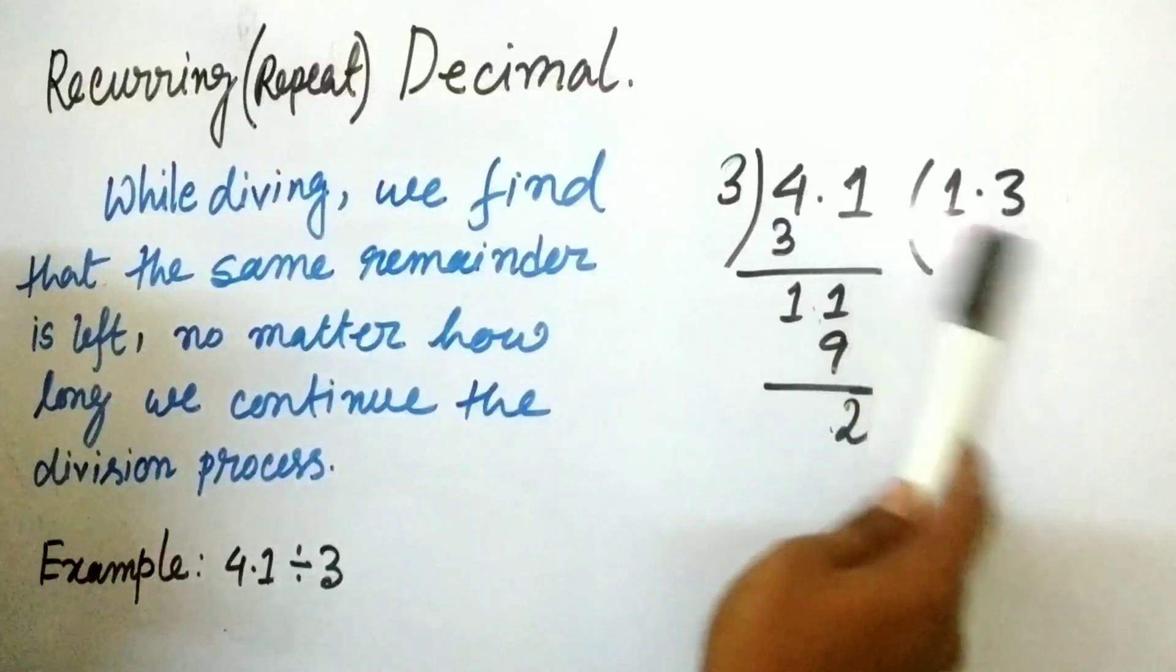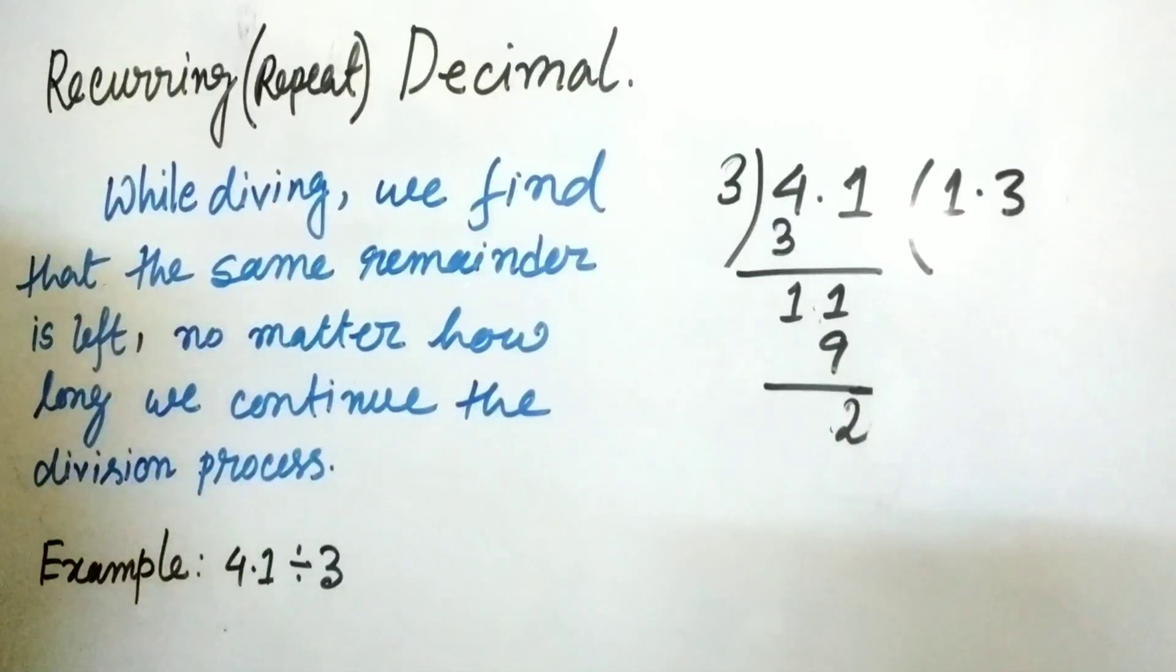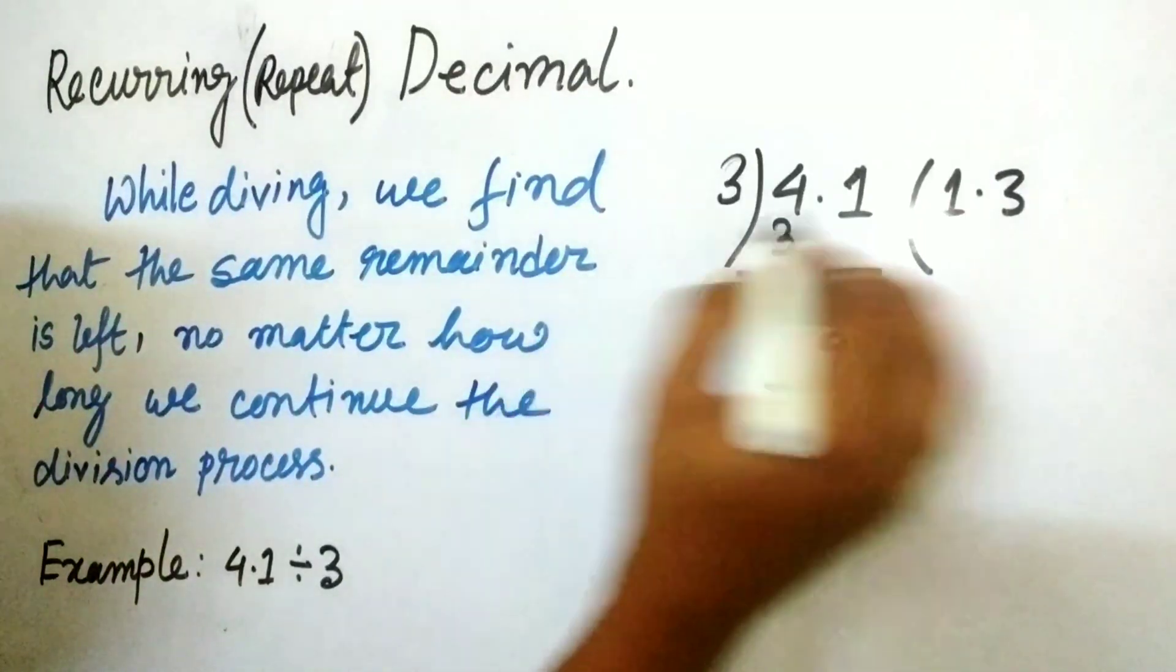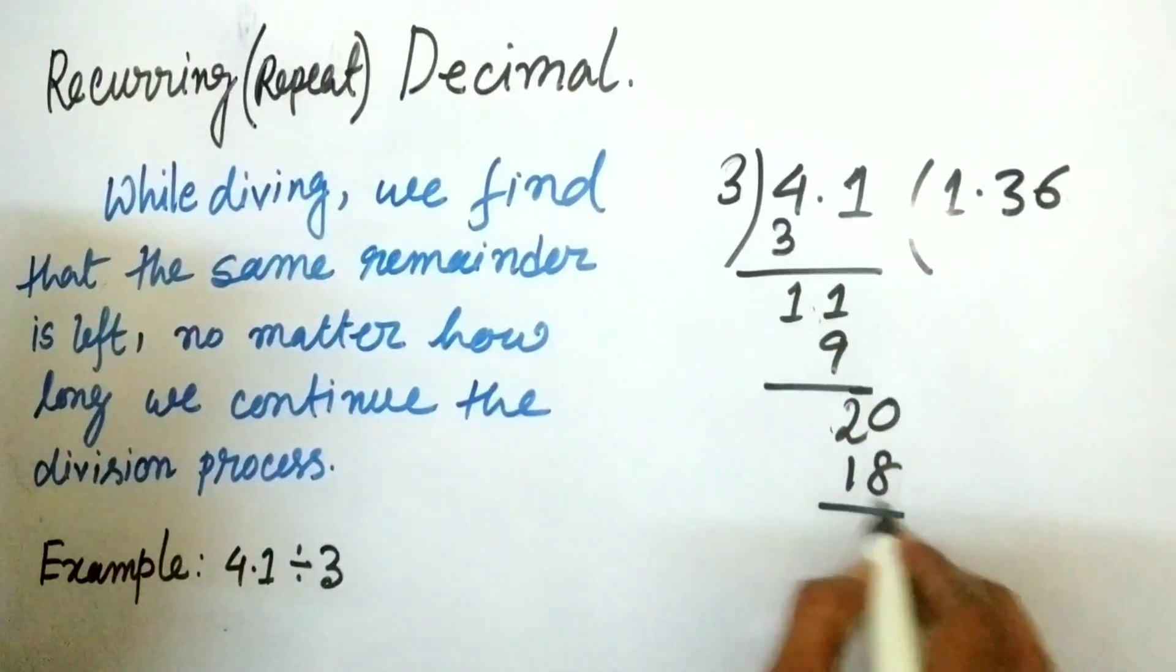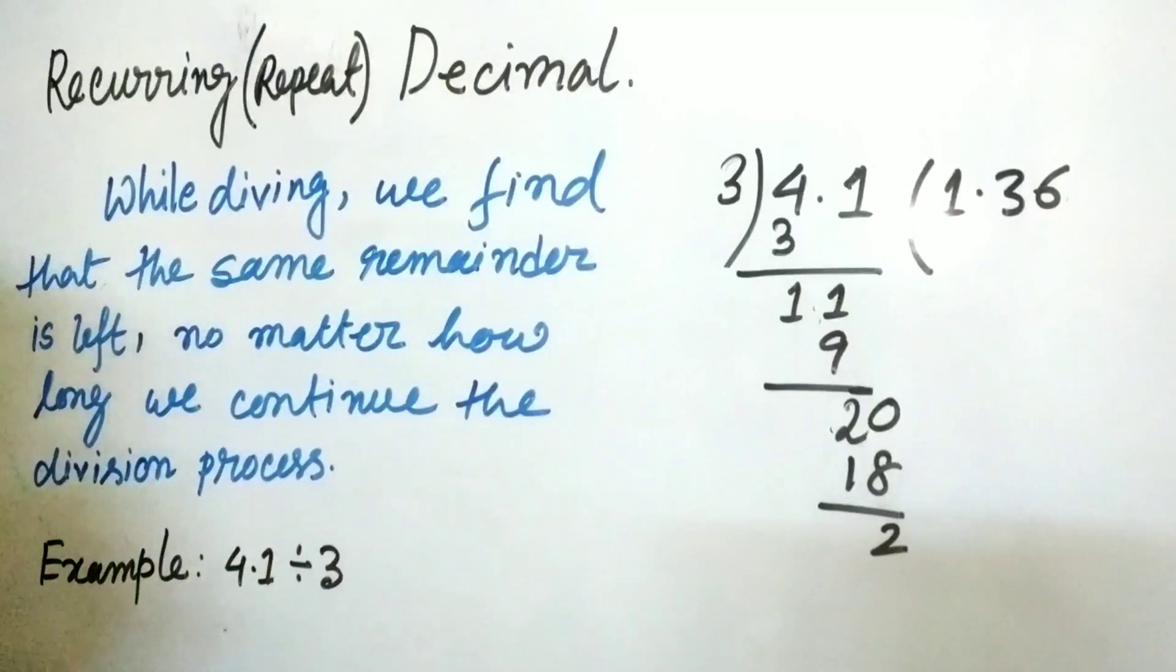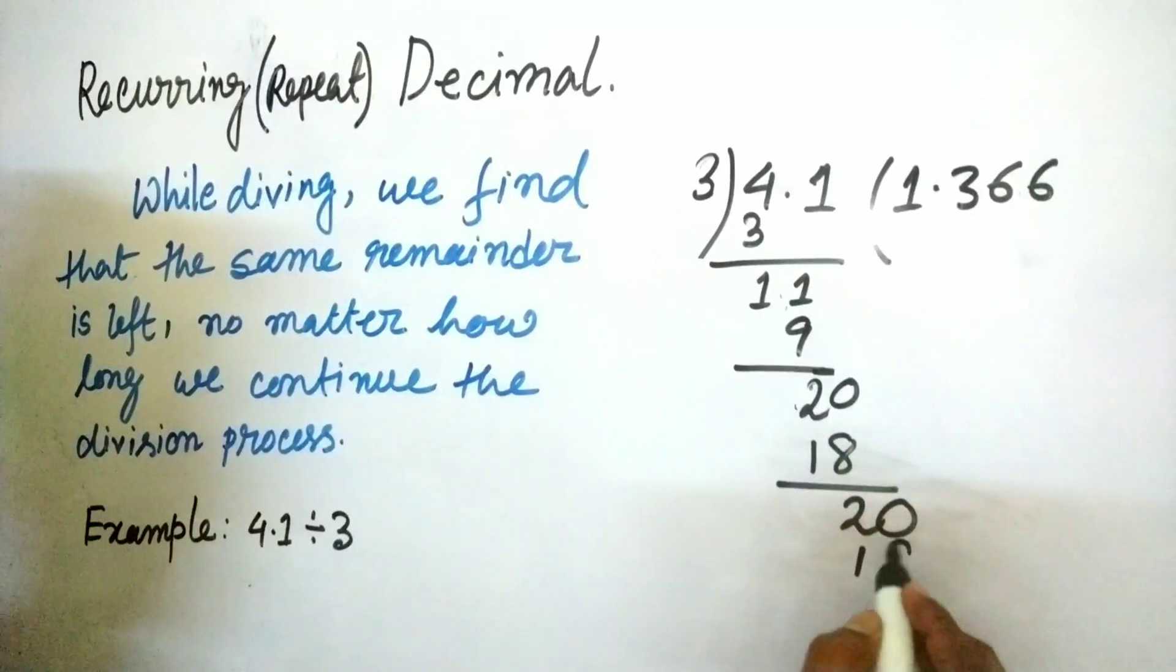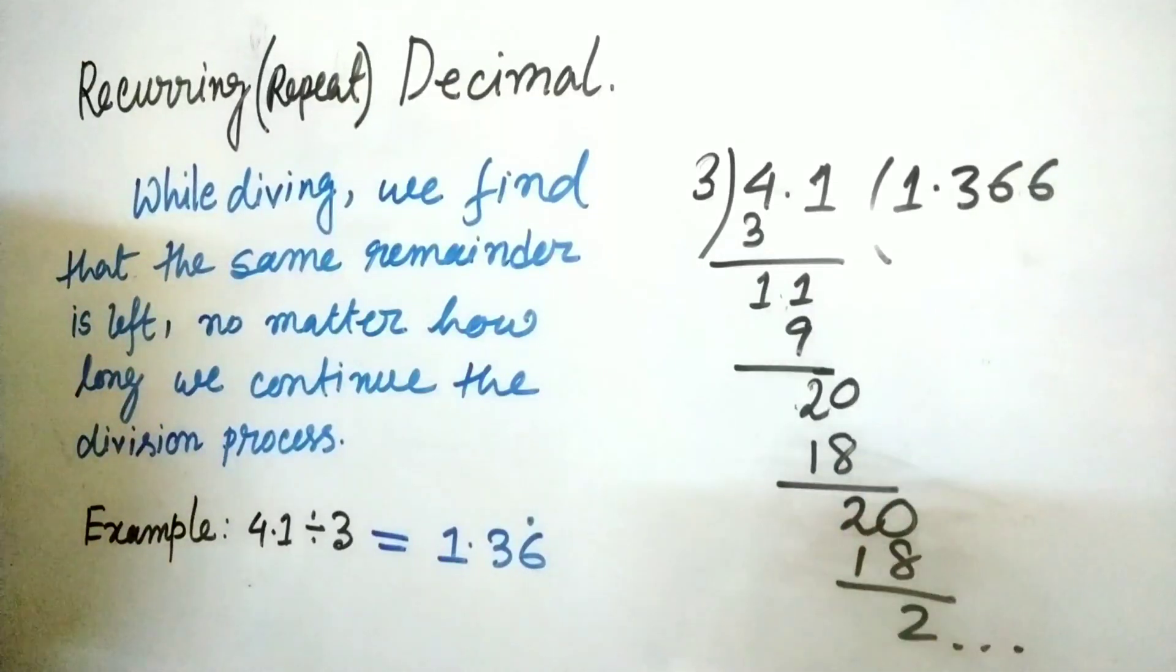Because we can put a number of zeros after the decimal point, we can put a 0 over here and we can write 6 and 18, and we can find again 2. We can put again 0 and 6, 18, then 2. It will be continued in this way and we will get 6 repeatedly. Because we are getting 6 repeatedly, we will write 1.36 and we will stop this repeating 6 by putting a dot just over 6.